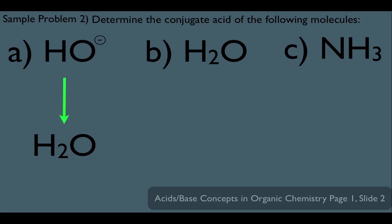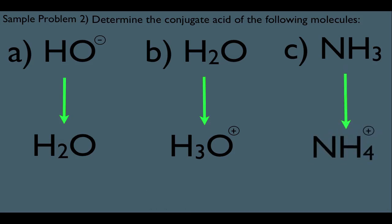Now let's look at B. What's the conjugate acid of H2O? Simply add a hydrogen — it becomes H3O. Since water started out as neutral, the new overall charge for this molecule is H3O+. For C, NH3 — adding a hydrogen and a plus charge to it would turn it into NH4+.